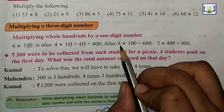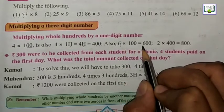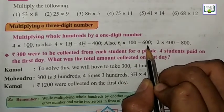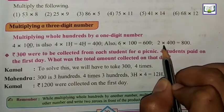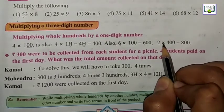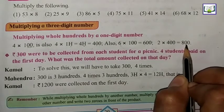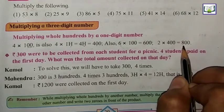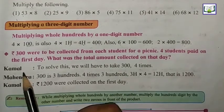We can see another example: 6 into 100 is 600. We can also write 6H. 2 into 400: 2 fours are 8, zeros as it is, we can write it as 8H.